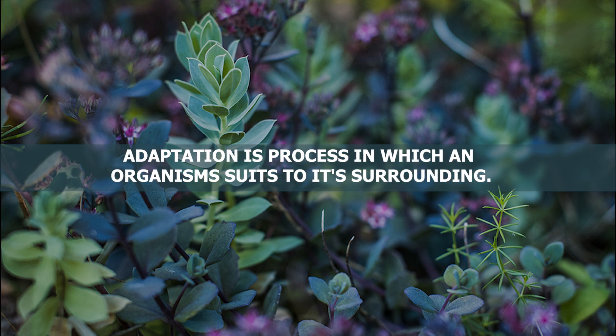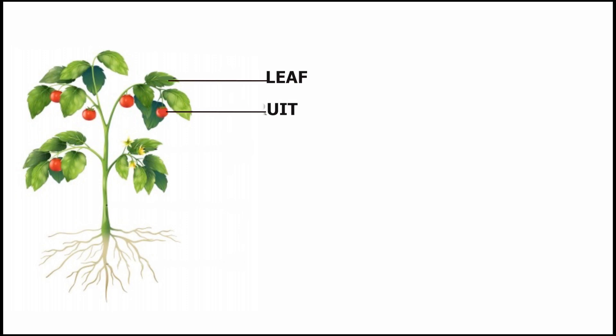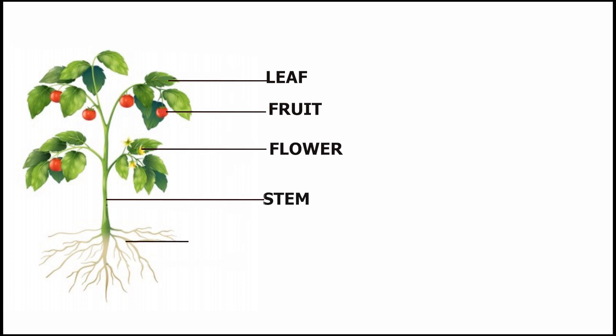Adaptation is the process in which an organism suits to its environment. Plants generally have roots, stem, fruits, flowers, leaf, etc. But due to surrounding environment and survival necessity, they have to modify some of these parts to perform tasks which are required for better growth and survival.